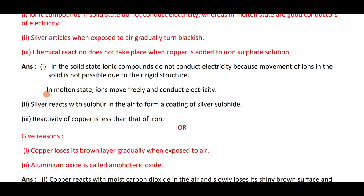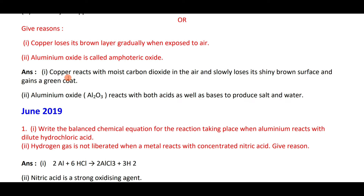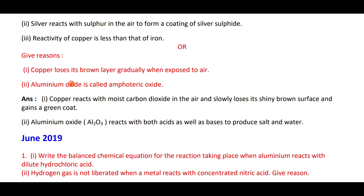Summary: silver forms a black coating of silver sulfide; copper forms a green coat. Aluminium oxide is an amphoteric oxide because it reacts with both acids and bases to form salt and water.